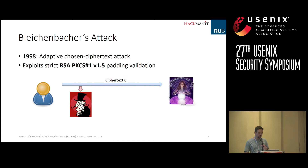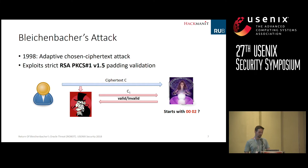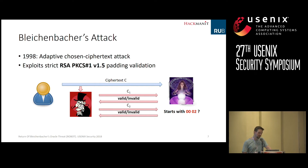The attacker sends the modified ciphertext to the server and misuses the server as an oracle. The server decrypts the message and validates whether it starts with 0x00 0x02 or not. Depending on validity, the server responds with valid or invalid. The attacker learns partial information about the message, proceeds with further modified ciphertexts, learns further bits from each server response, and continues until he can decrypt the whole message.